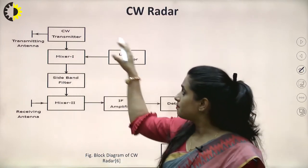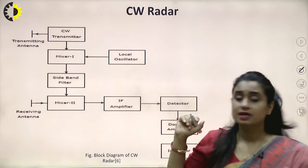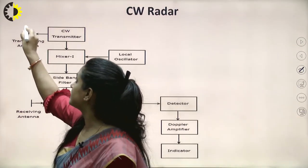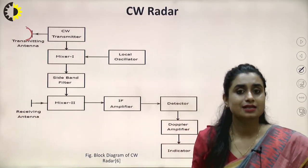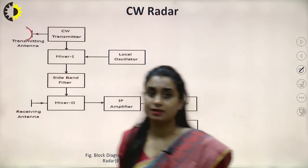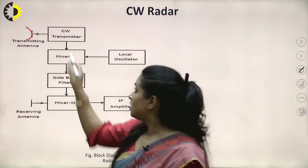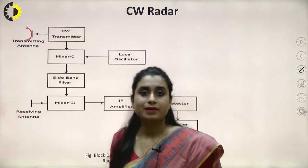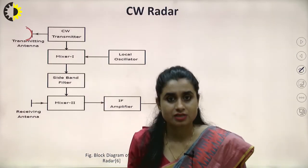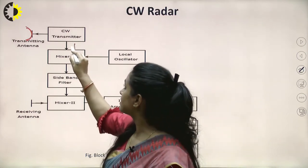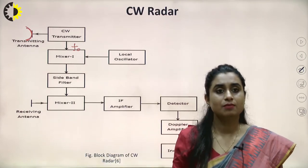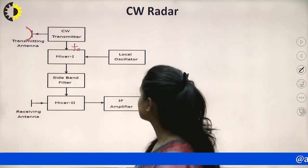The block diagram consists of a transmitter part as well as a receiver part. The transmitter part has a transmitting antenna. In radar communication, the transmitting antenna is usually parabolic in nature, so the continuous wave transmitter is associated with a parabolic reflector. One of the inputs goes to Mixer 1. Mixer 1 is a product modulator to which two inputs are applied: the wave generated for transmission with frequency fo, and a locally generated frequency from a local oscillator.